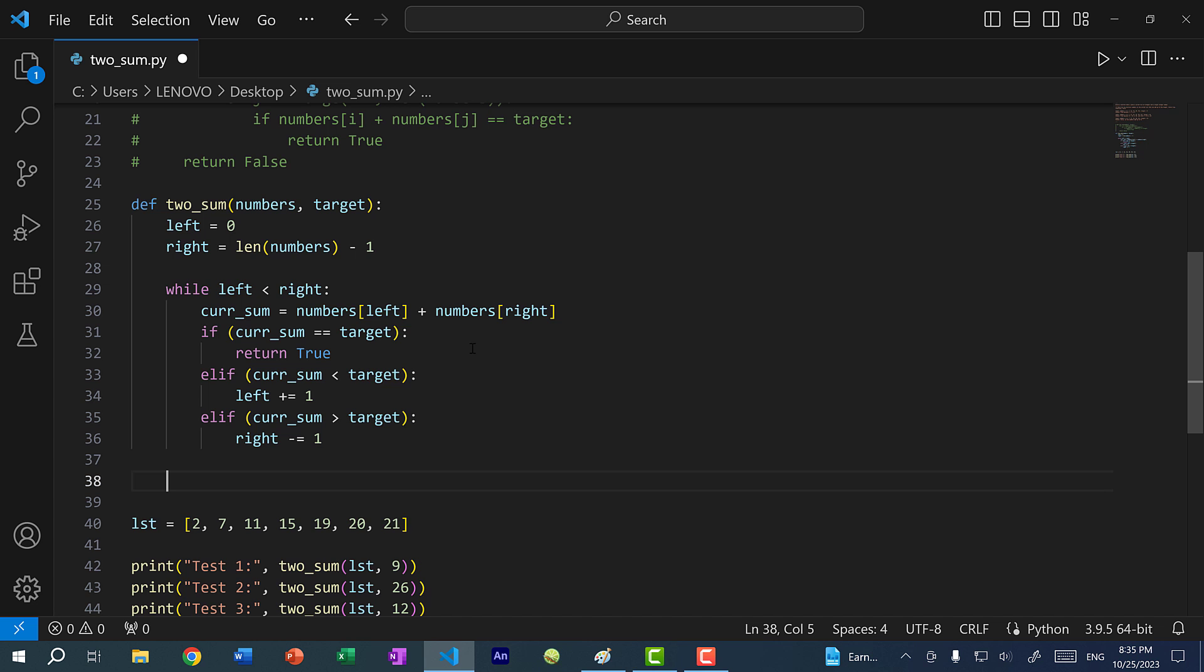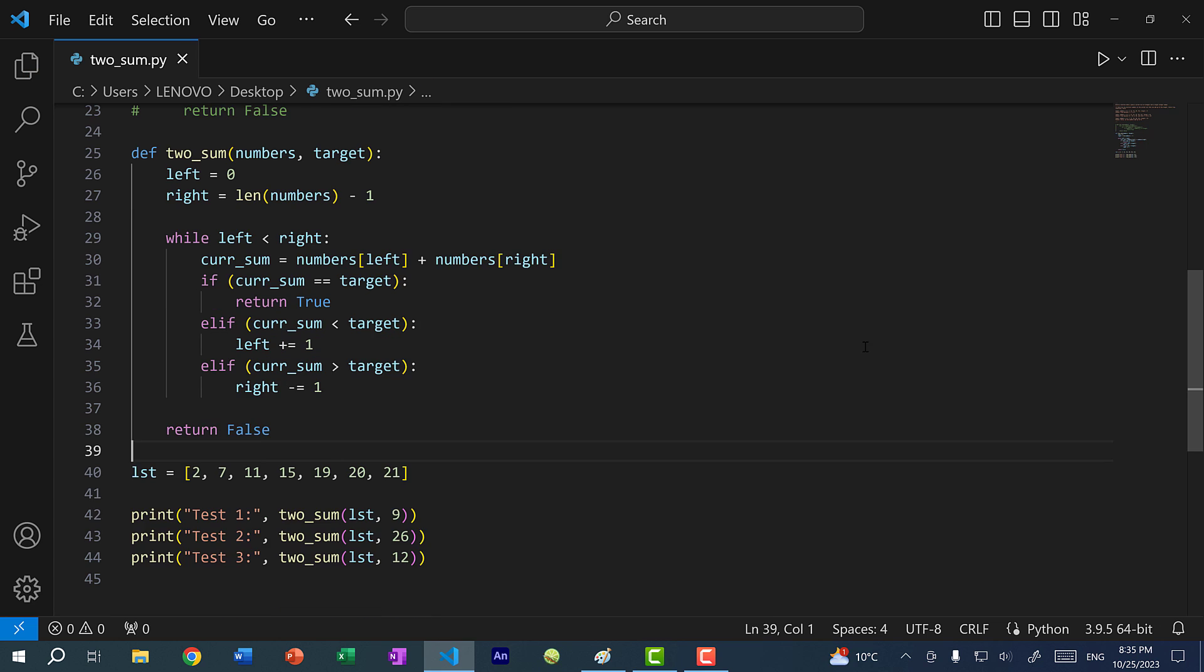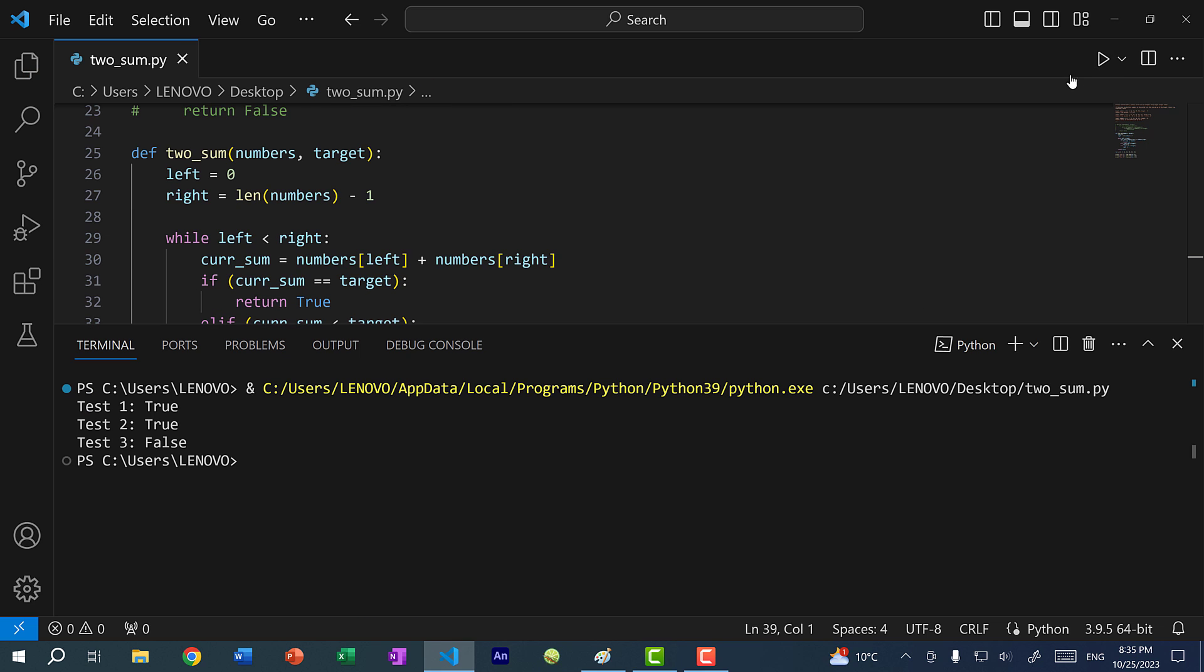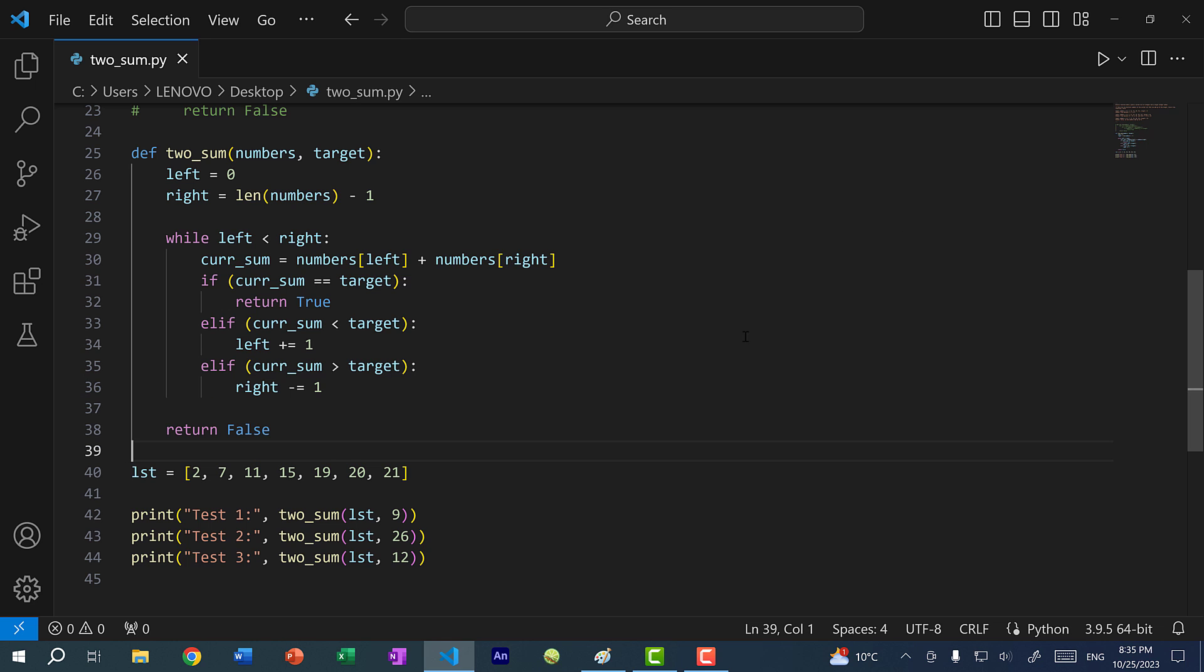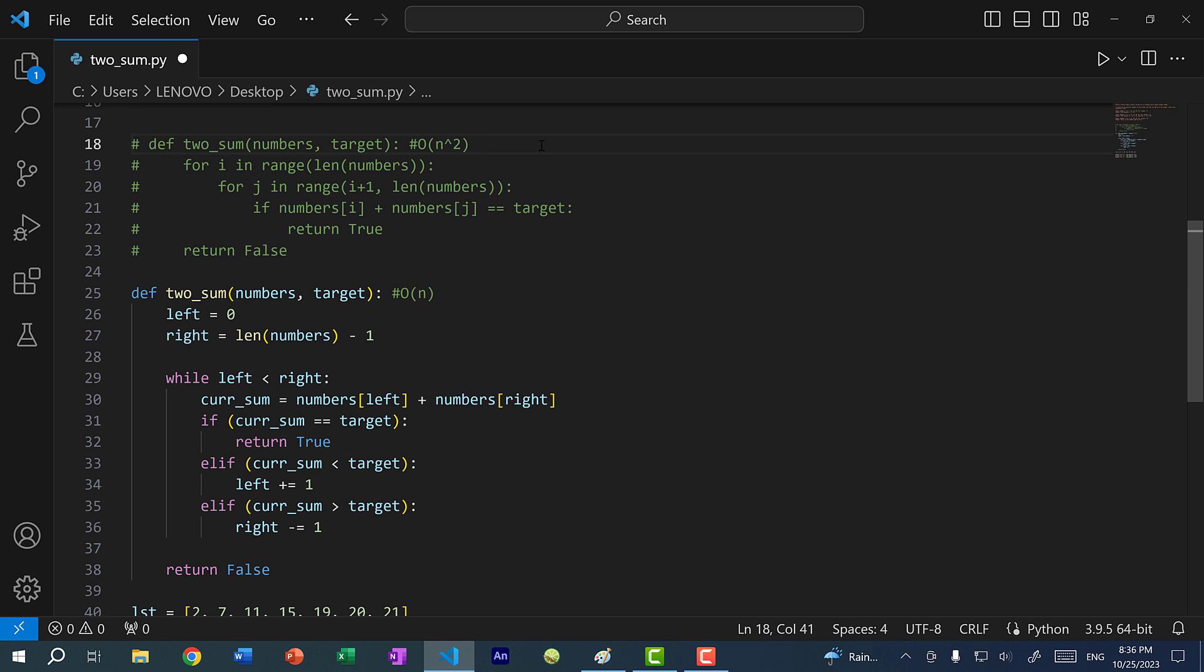All right, so let's run our program. As you can see, we have true, true, false, so this is a much more efficient solution because we only iterate through the list once, and the strategy works because the list of the numbers is sorted. So the runtime of our function here will be O(n), whereas the runtime over here will be O(n²).